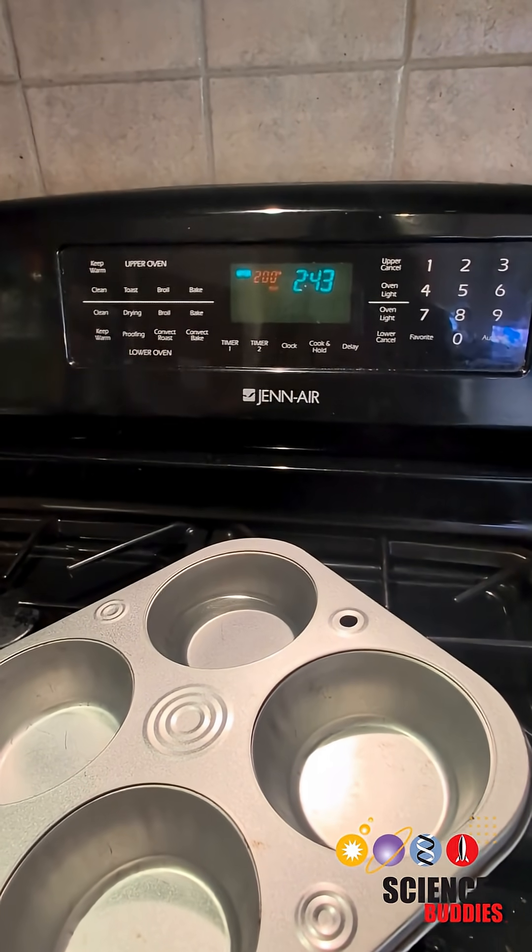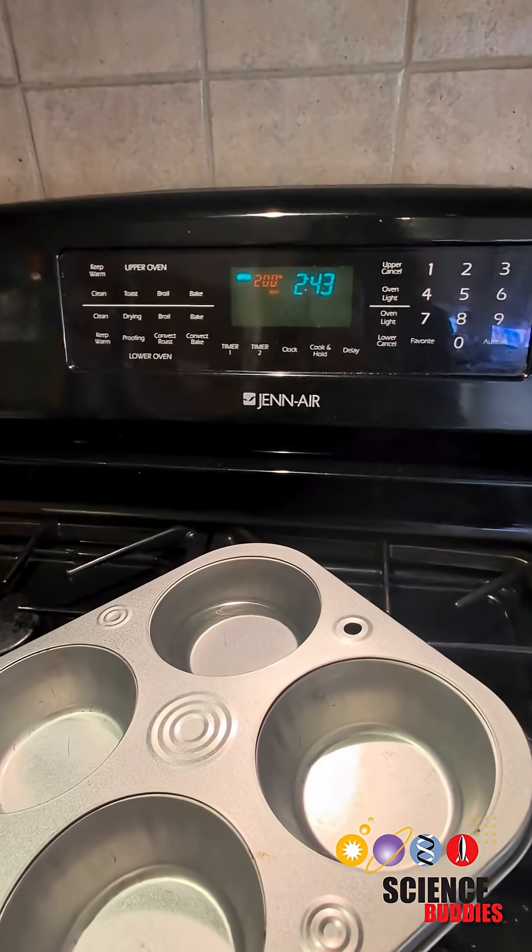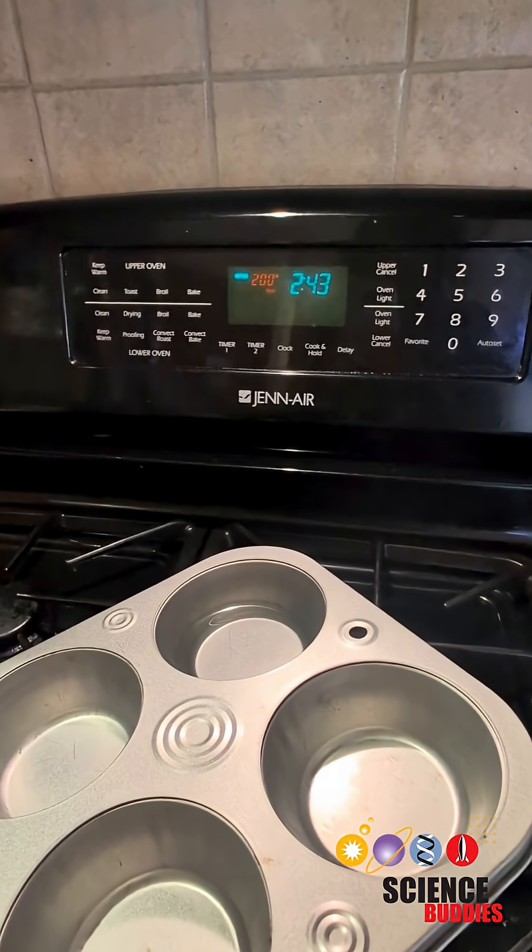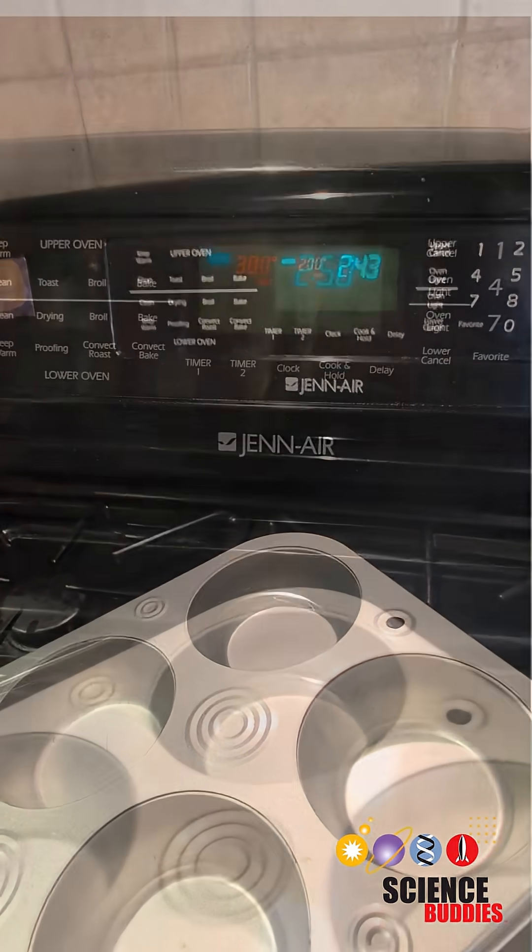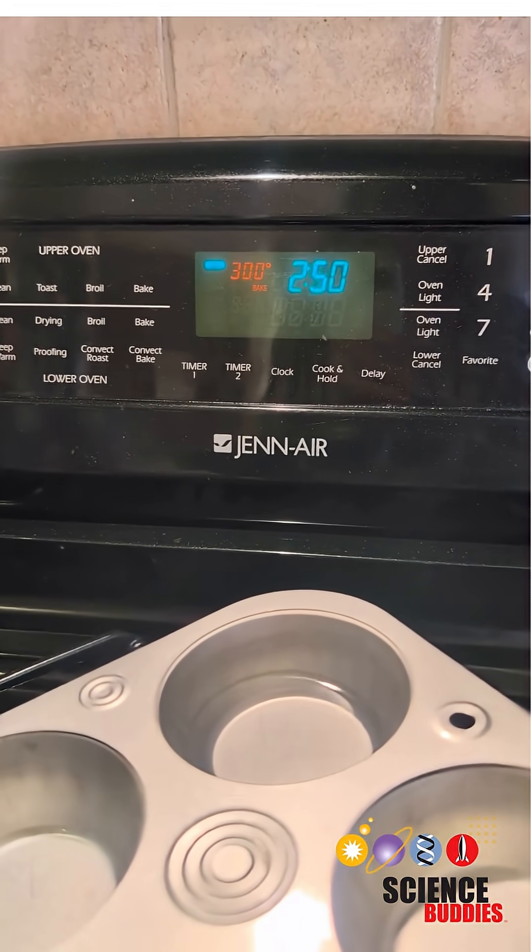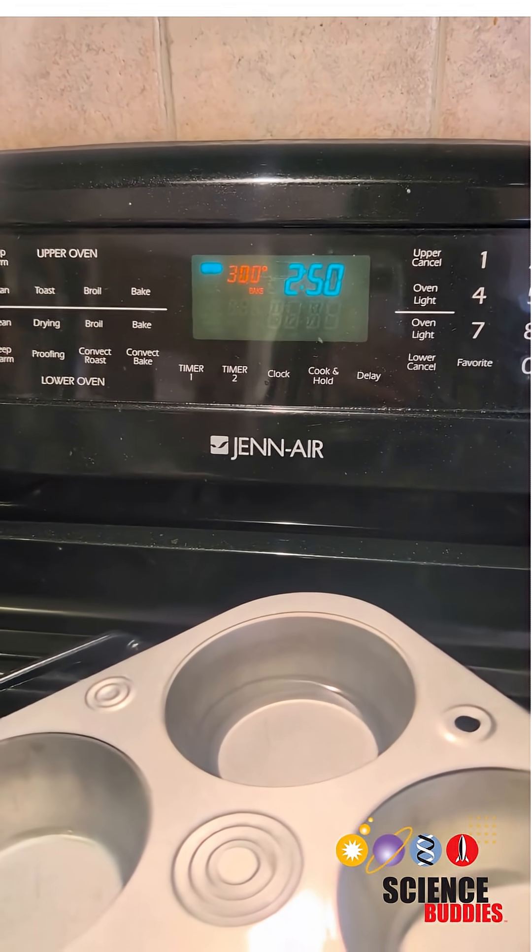For one of your water samples you'll want to put it in the oven set to 200 degrees Fahrenheit. Have an adult help you set the oven to the correct temperature and help you use the oven. Take one of your water samples and put it in the oven at 300 degrees Fahrenheit.